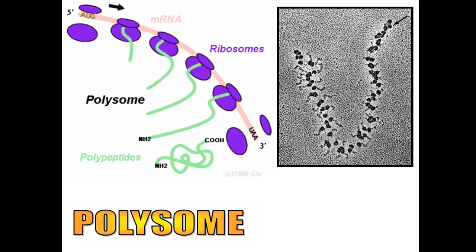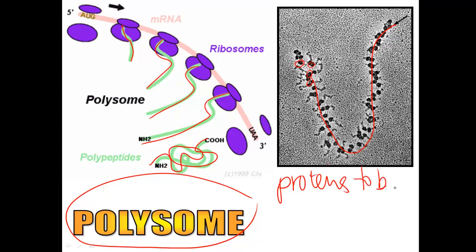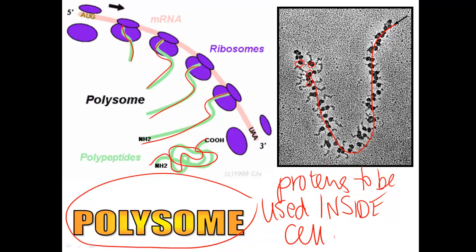Some ribosomes are free-floating in the cytoplasm, and many times they'll be joined together in a chain. When they're joined together in a chain like this, we call it a polysome. What a polysome does is it makes many, many copies of the same protein, because the cell is always creating proteins that are needed inside the cell. For example, if your cell needs many copies of a protein to help create new copies of DNA, then the polysome ribosomes will be making that protein.